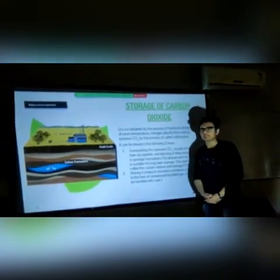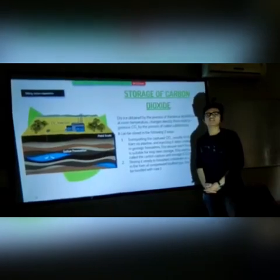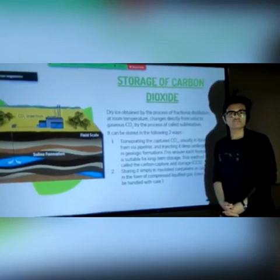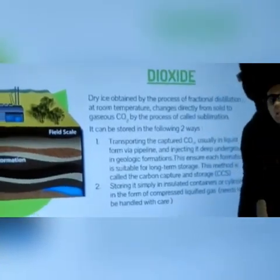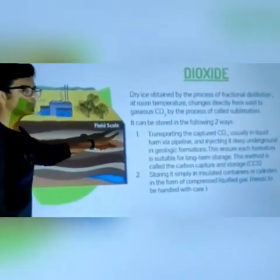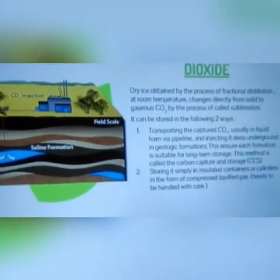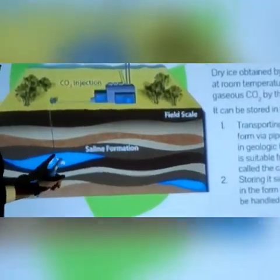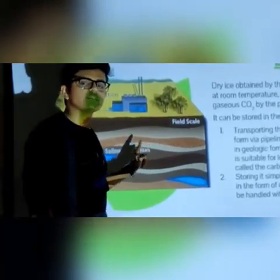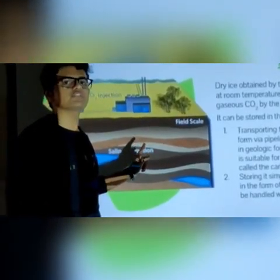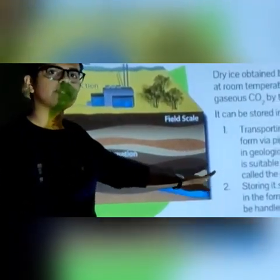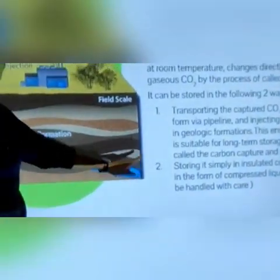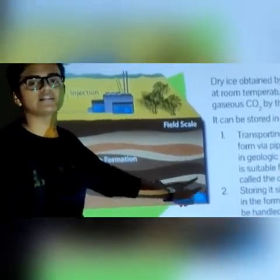Dry ice obtained by the process of fractional distillation at room temperature changes directly to gaseous CO2 by the process of sublimation. It can be stored in the following two ways. First, transporting the captured CO2 via pipelines directly to geological formations of the earth where it can be stored permanently — this is called the CCS method, the carbon capture and storage method. Second, storing it in simply insulated containers or cylinders in the form of compressed liquefied gas, but they need to be handled with great care.